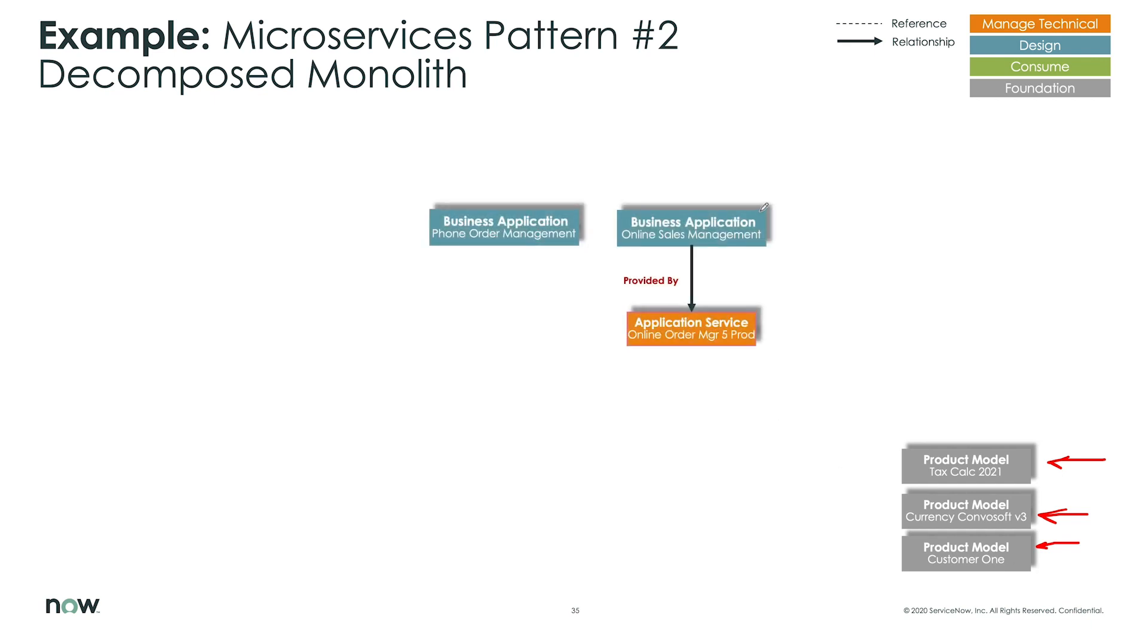And here what we see is an online sales management application. But in this scenario, this is a decomposed monolith, which means that the application services that are part of it are all owned and governed as a whole. They're not shared independently to other applications that might be calling into it. So things are managed, governed, and also financed, in this case, in one business application tier.